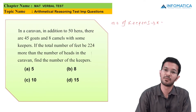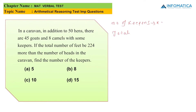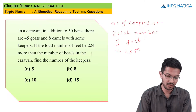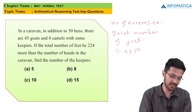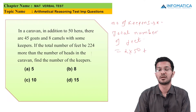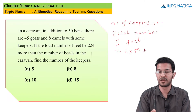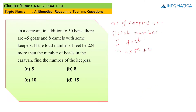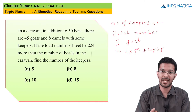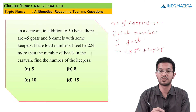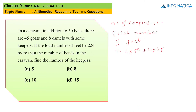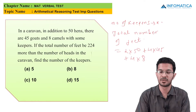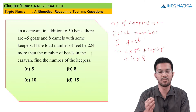We have to calculate the total number of feet. That is 2×50, because hens have 2 legs and we have 50 hens. Next, for 45 goats — goats have 4 legs — so 4×45. Then 8 camels, which also have 4 legs, so 4×8. And for the keepers, since I don't know how many there are, I write 2×X, since keepers have 2 legs.